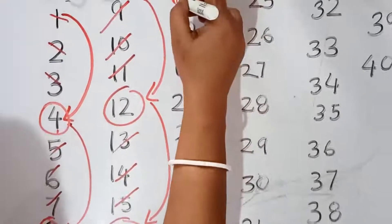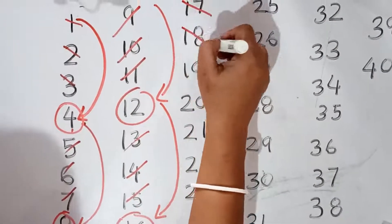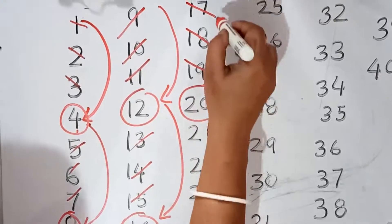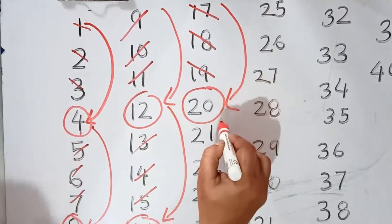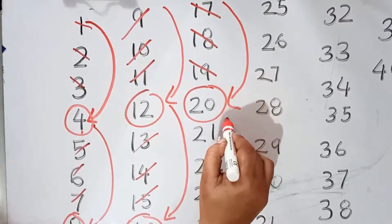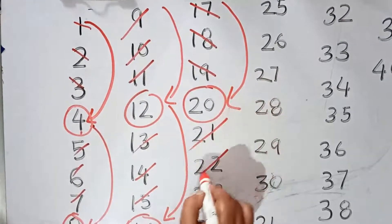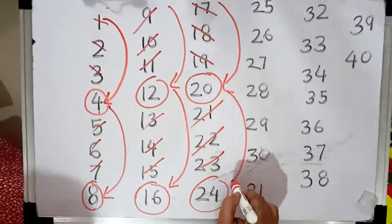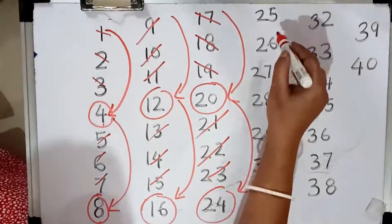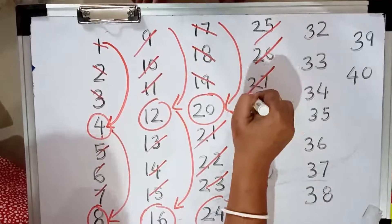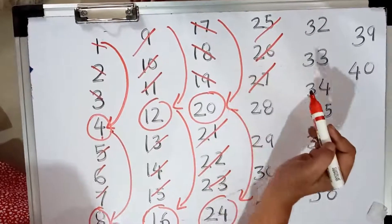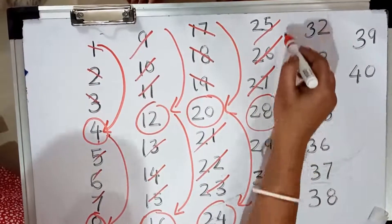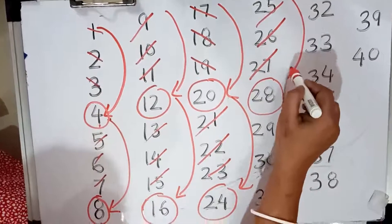Again, jump 3: 1, 2, 3 — which number is there? Number 20. Next, again jump 3. Then 25, 26, 27 — we are jumping. Which number is coming? 28.